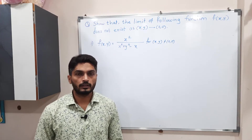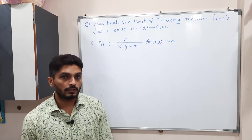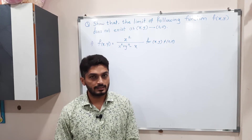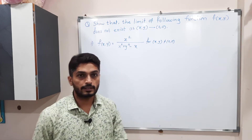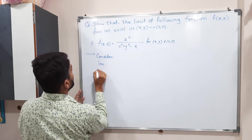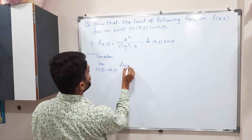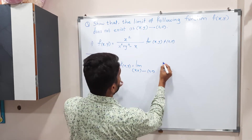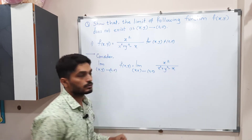Let us solve this example of a scalar valued function. Just like the previous video where we saw how to show that a given limit does not exist, here also we have to do the same thing. As (x,y) tends to (0,0), we have to prove that this limit does not exist. Let us consider the limit as (x,y) tends to (0,0) of f(x,y), where f is defined as x² / (x² + y² - x).